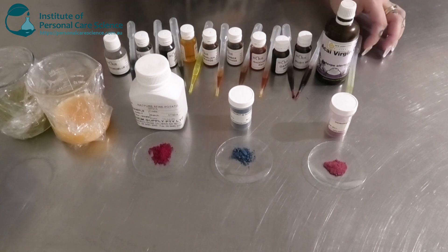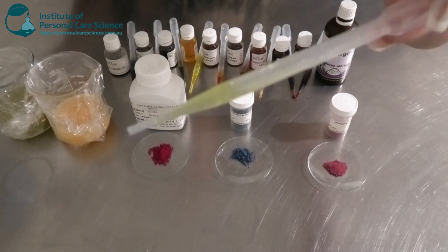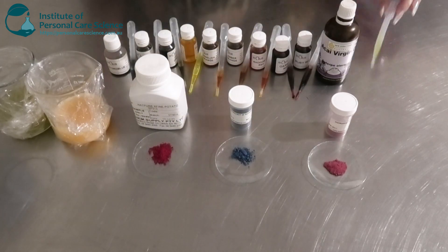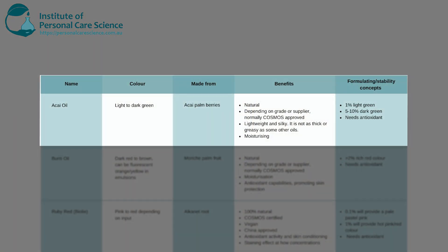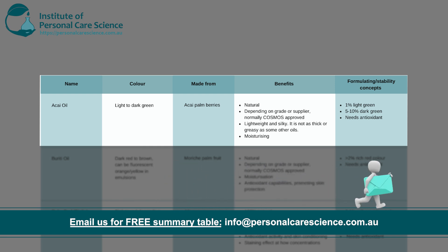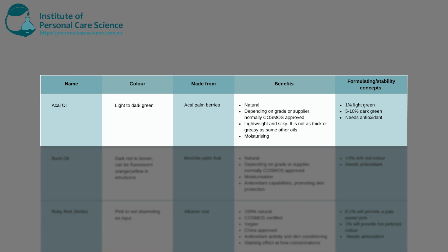My first example is acai oil. As you can see, it's quite a light green color. In a cosmetic product, depending on the input you use, this can give a light to dark green shade. The oil comes from acai palm berries. It's obviously natural, and depending on the grade or supplier, it normally comes Cosmos approved or certified. It's also lightweight and silky in texture — not thick and greasy like most other plant oils — and it has really good moisturizing and antioxidant benefits for the skin.